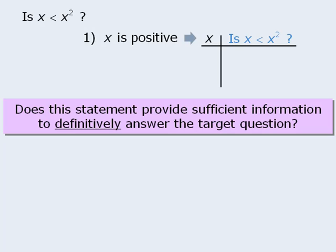So if x is positive, x could equal 2. When x equals 2, x squared equals 4. So when x equals 2, the answer to our target question is yes — x is less than x squared.